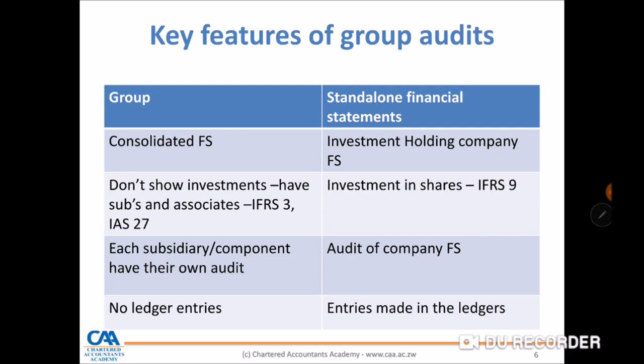Another key feature of group audits is that each subsidiary or component will have to be audited on its own. With standalone financial statements, the auditor audits the financial statements of a single entity. In the group, we have single entities consolidated into one, so there are different audits at entity level, but at group level we audit the consolidated set of financial statements.